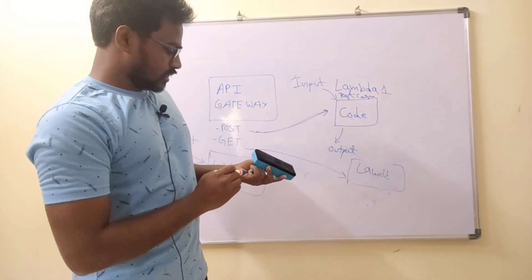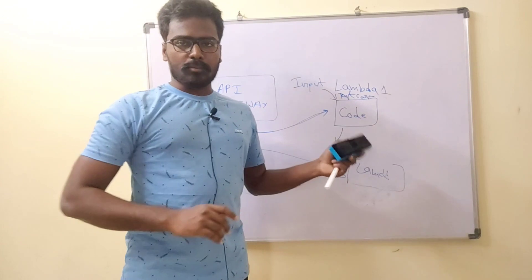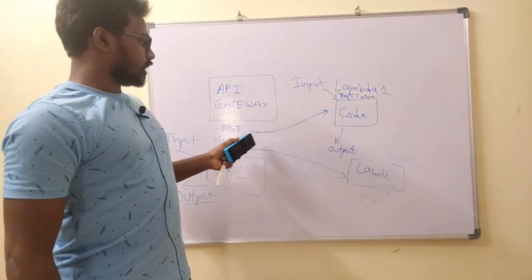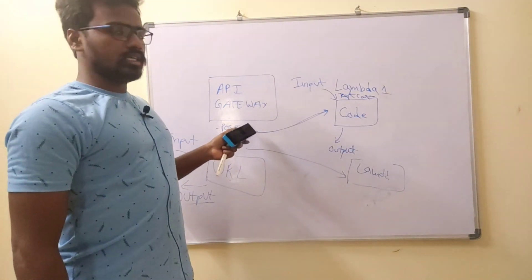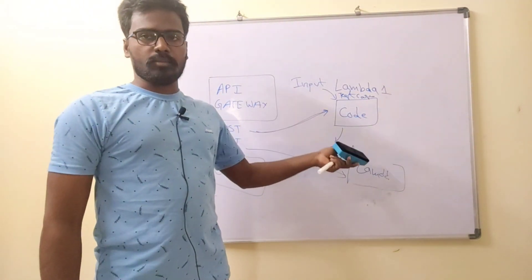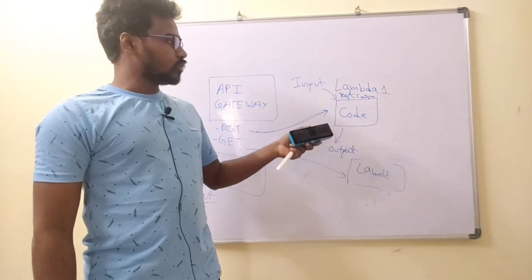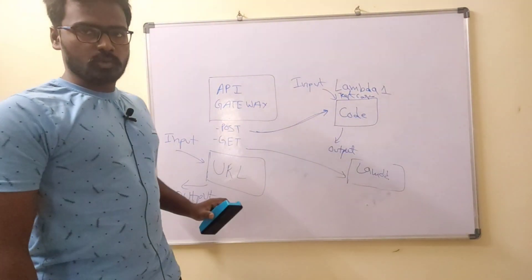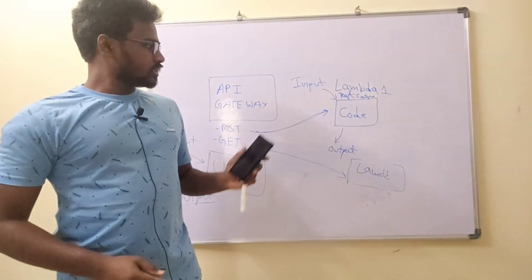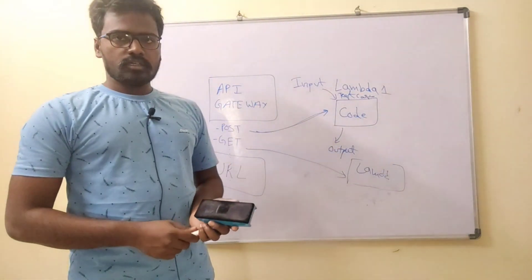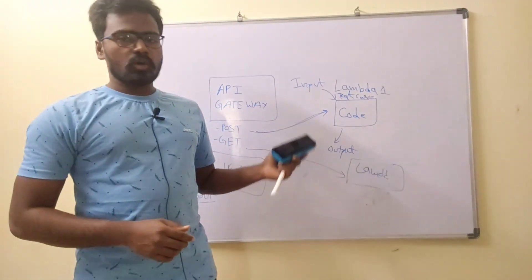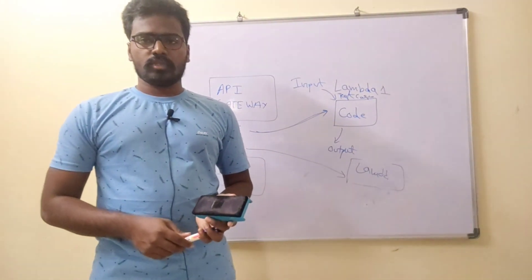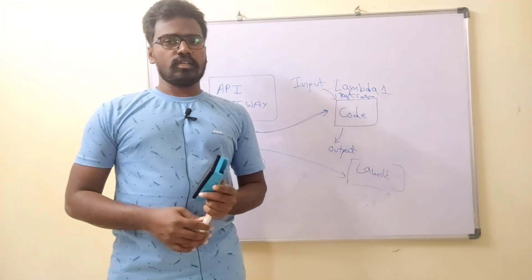This is the way we can use a Lambda function. We can create different types of APIs using API Gateway and connect each API to a particular Lambda function to execute the code and get the final results in the response. I hope you understood this diagram. For practical knowledge, we will see it in the next videos. Please like, share and subscribe to my channel. Thank you for watching.